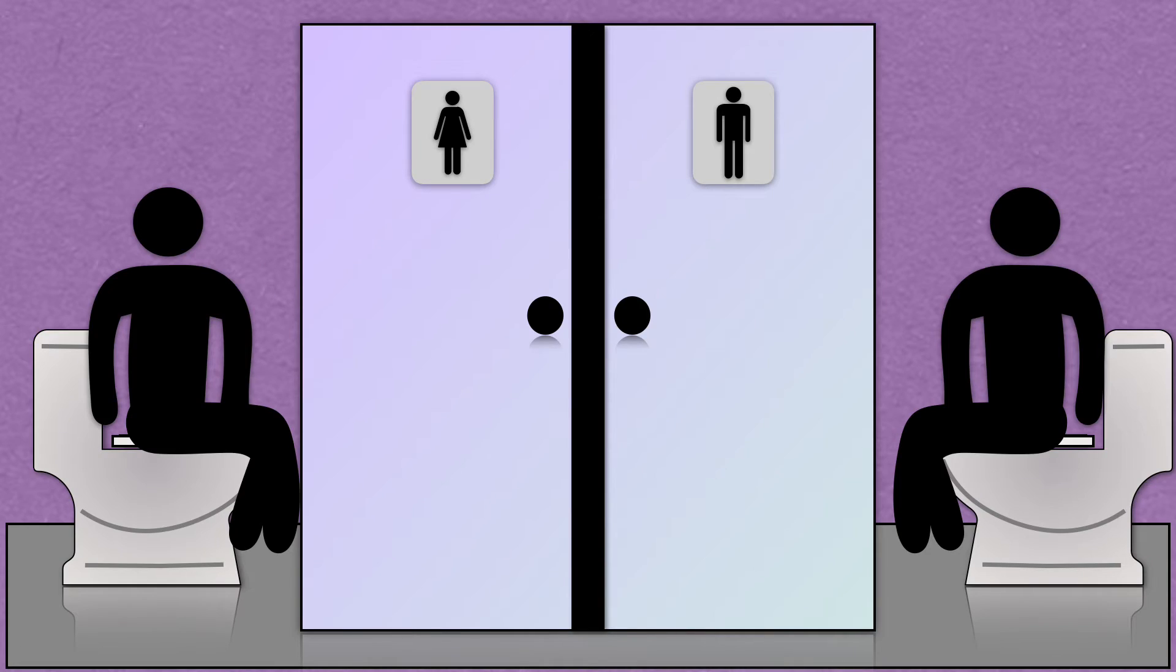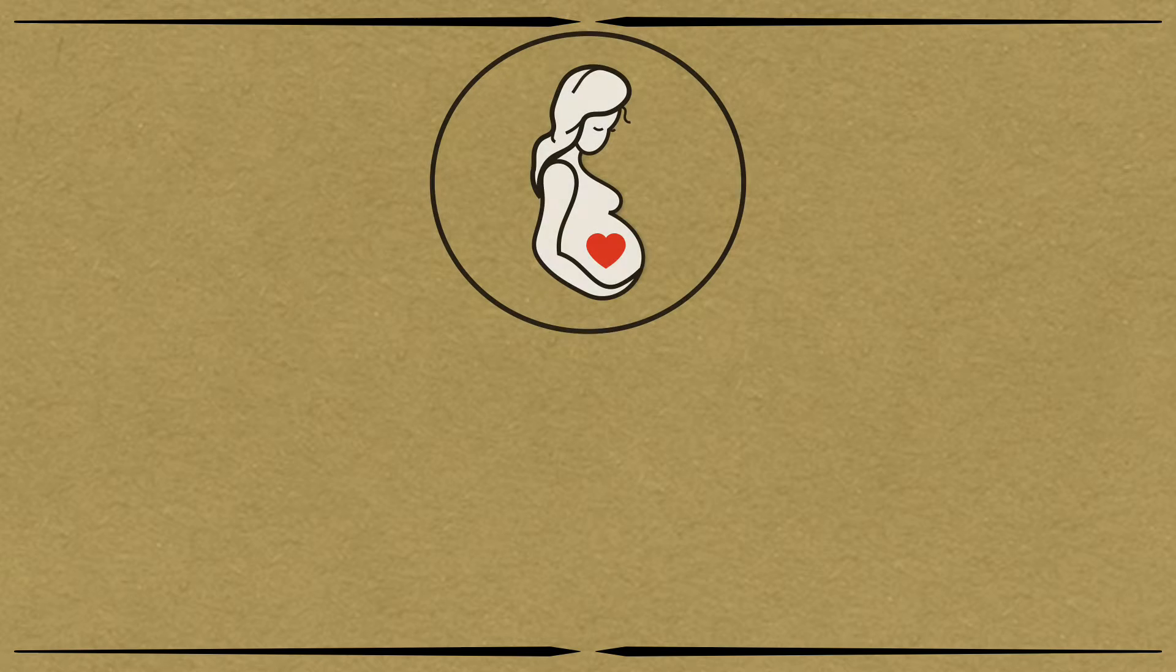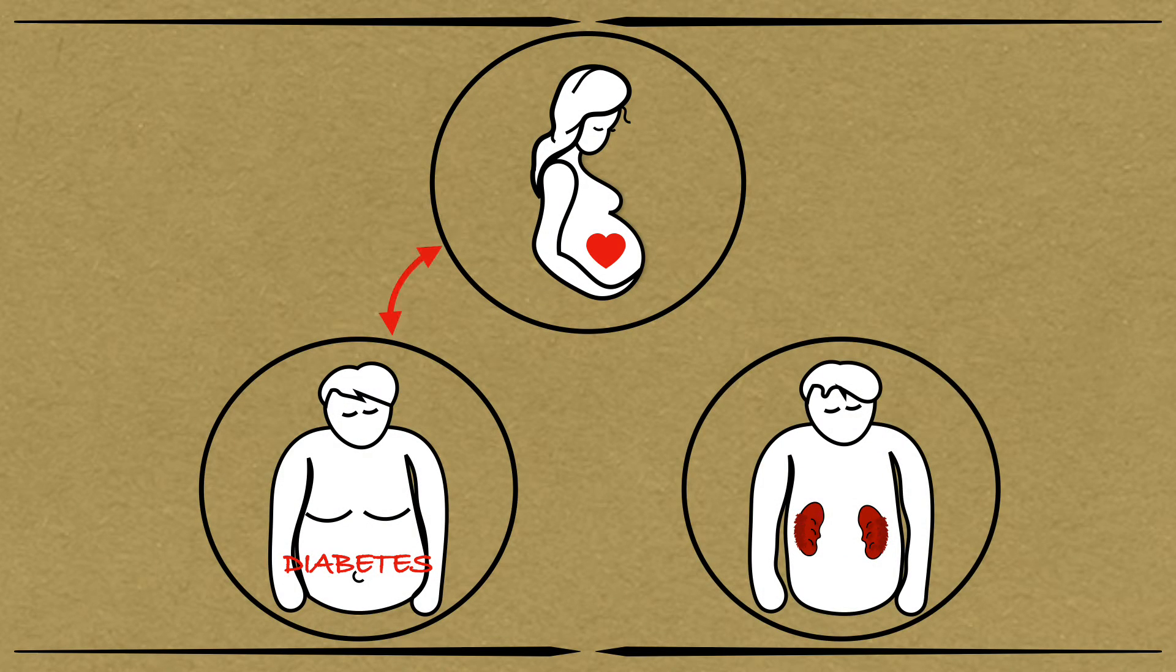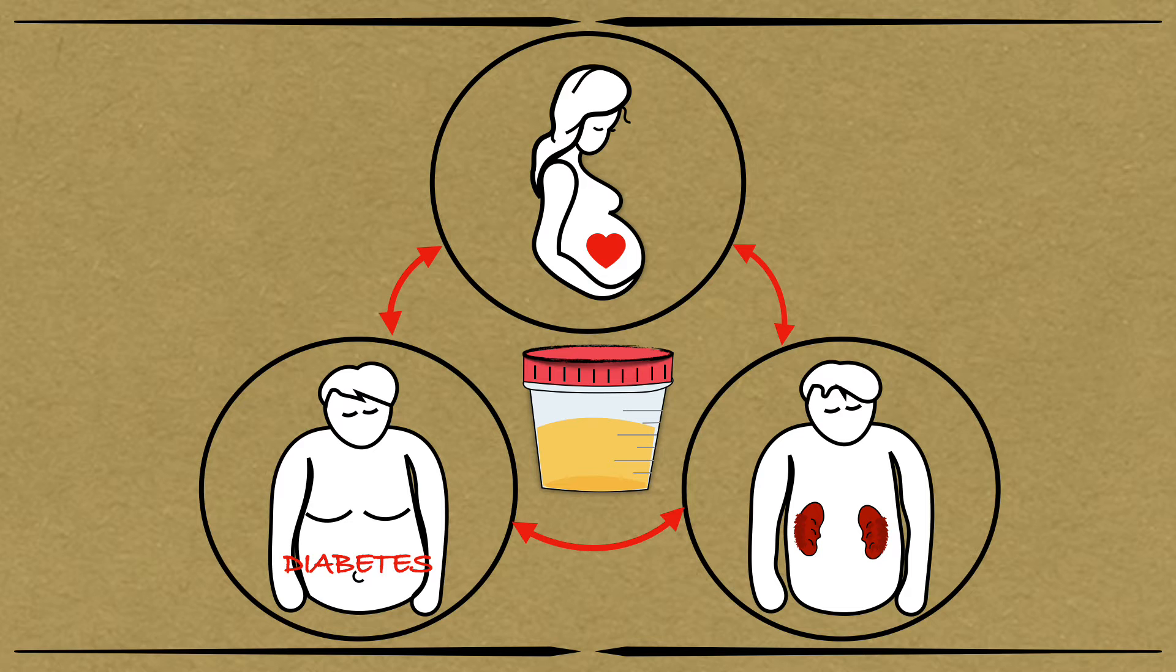Everybody pees, you know that. But what does, for instance, the miracle of pregnancy and threatening diseases like diabetes or renal failure have in common? The answer is that they can all be detected using a simple urine test.